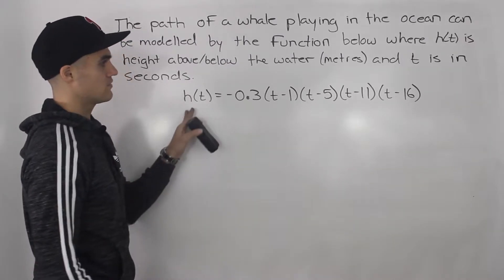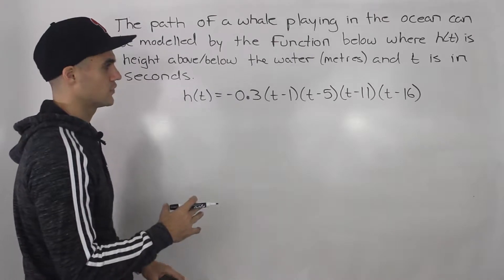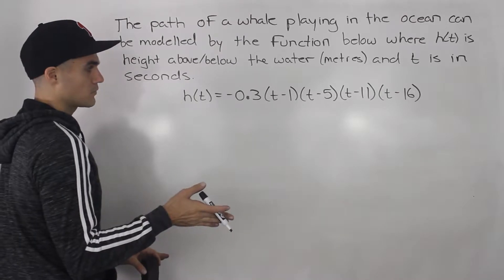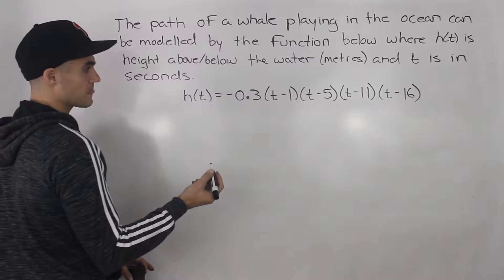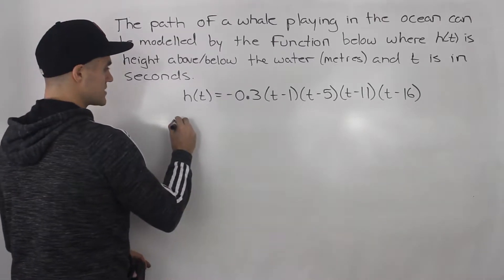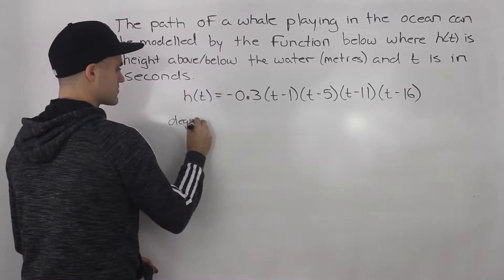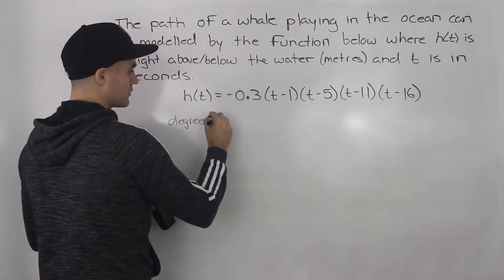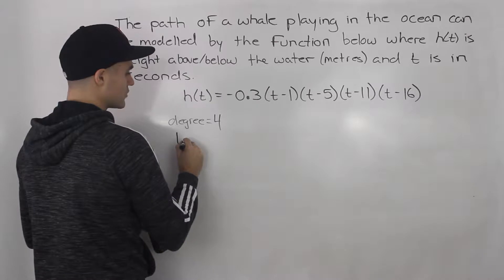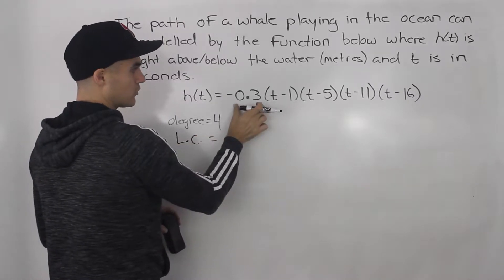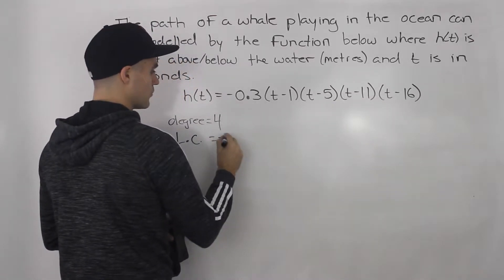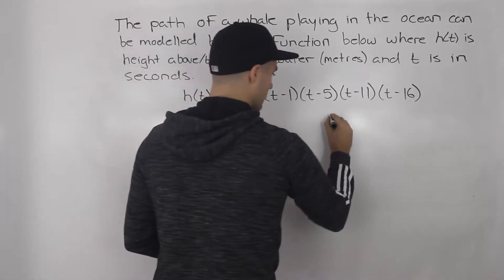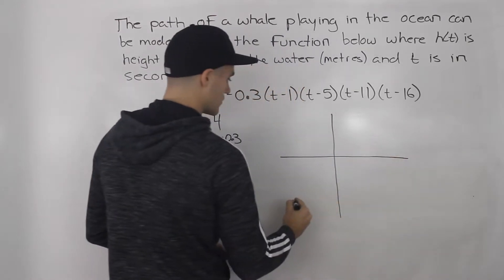Notice how this is just a polynomial function that's already factored. We can follow the steps for graphing factored polynomials. The degree of this polynomial — with t appearing four times — is 4. The leading coefficient is -0.3 times 1 times 1 times 1 times 1, so negative 0.3. With an even degree and a negative leading coefficient, the end behavior goes from top-left down to bottom-right.